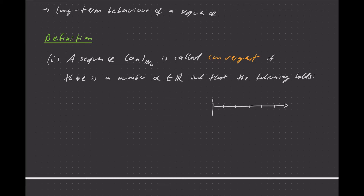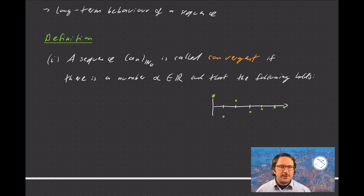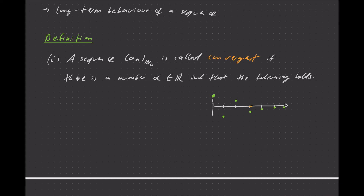Let's say we have a sequence that behaves like this: it starts at some value, then jumps around, and maybe then stays down but gets closer and closer to 0. The idea is that in the long term, that sequence tends to 0 — the values get closer and closer to 0 without leaving it again. We call this a convergent sequence, because it closes in on a certain value, in this case 0. And that value is called the limit — that's going to be our alpha.